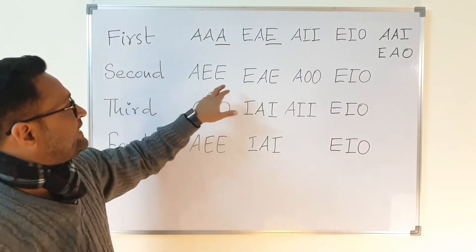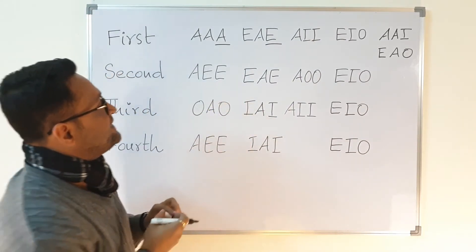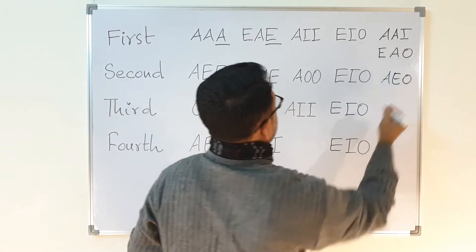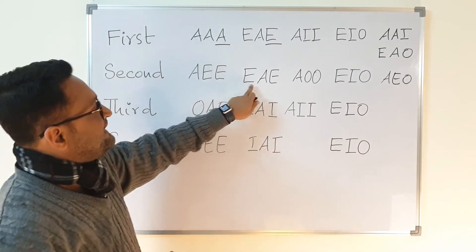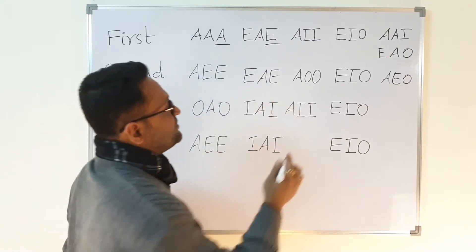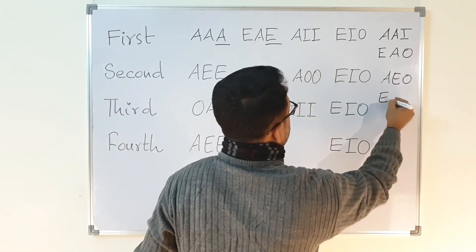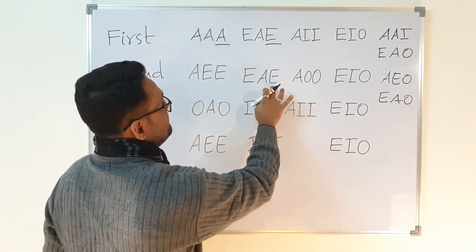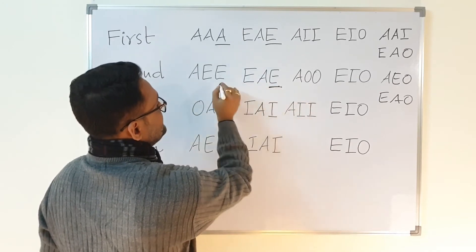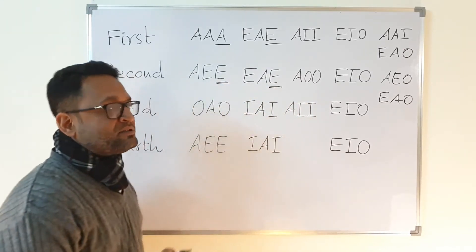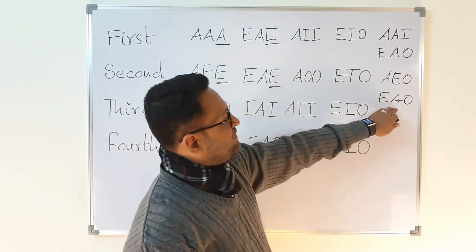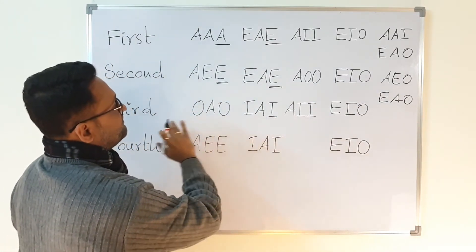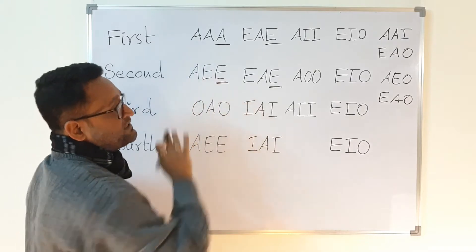In the second figure, if AEE is valid then AEO will also be valid. If EAE is valid then EAO will also be valid, because I am sufficiently weakening the conclusion. So we have found these additional syllogisms. In the third figure you do not find that the conclusion is a universal proposition, so we proceed differently.